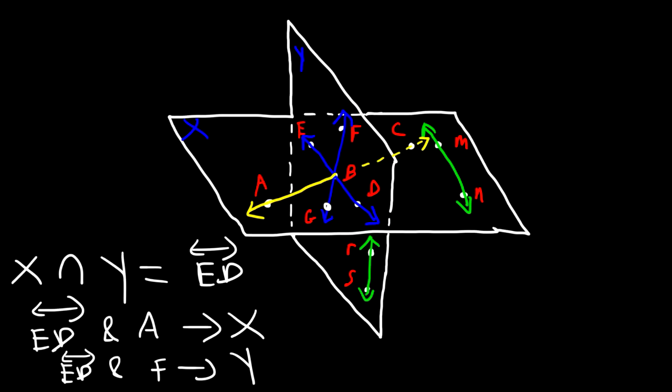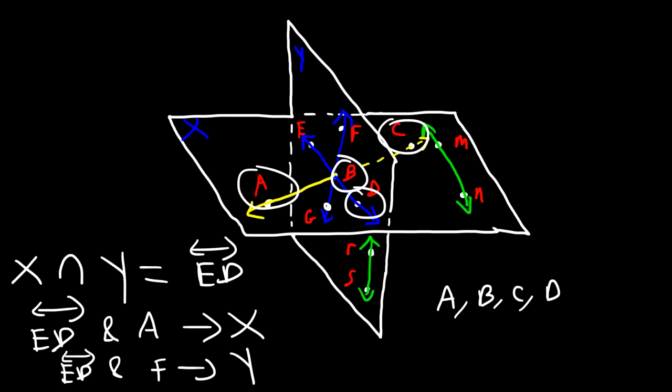Which points are coplanar with A, B, C, and D? A, B, C, and D are found in plane X. So the other points that are coplanar with these four are the other points found in plane X.